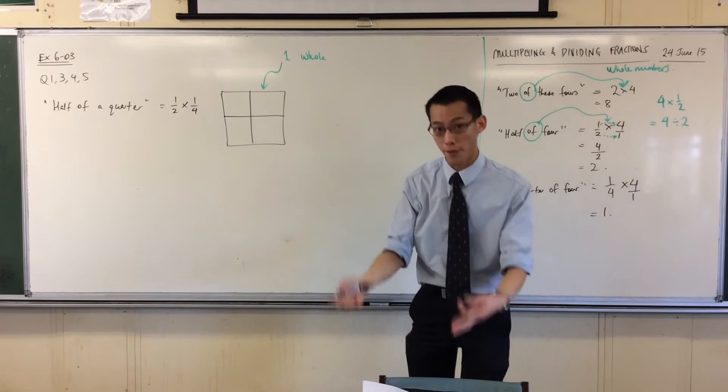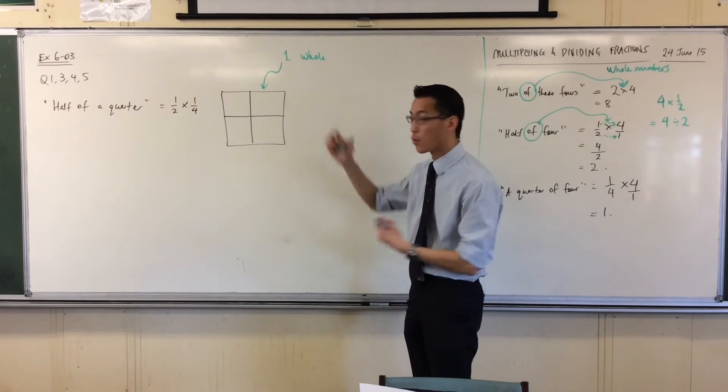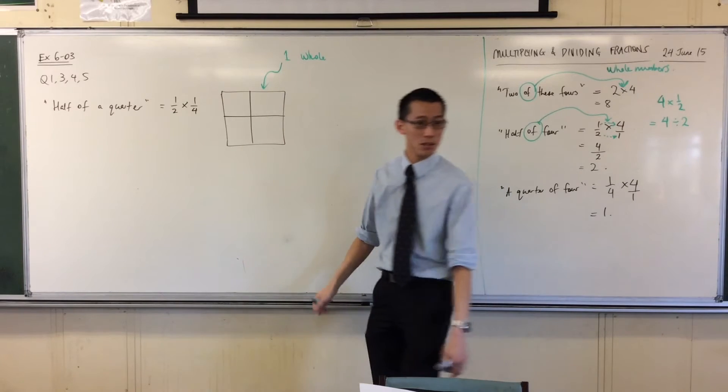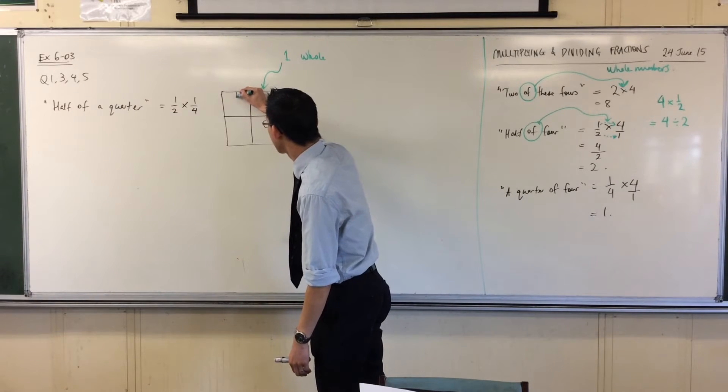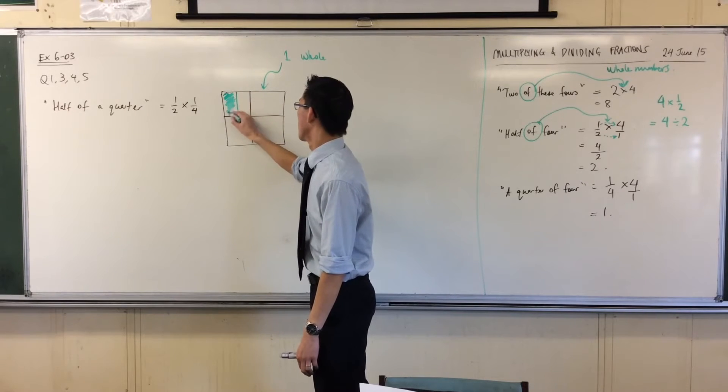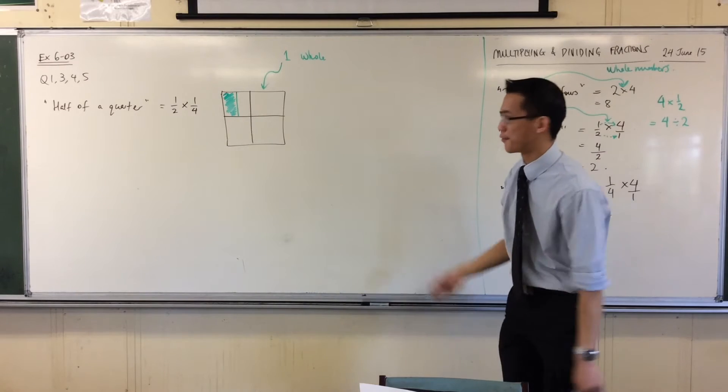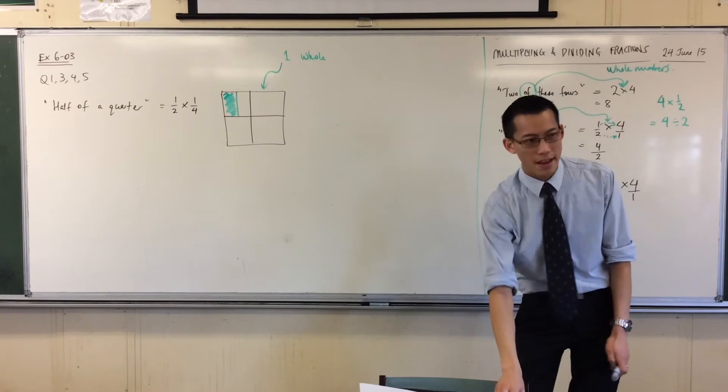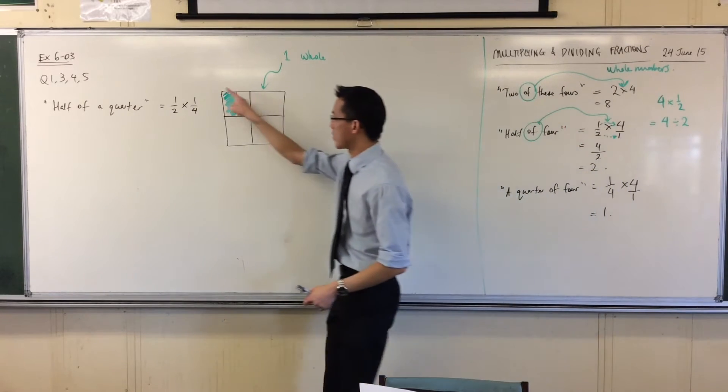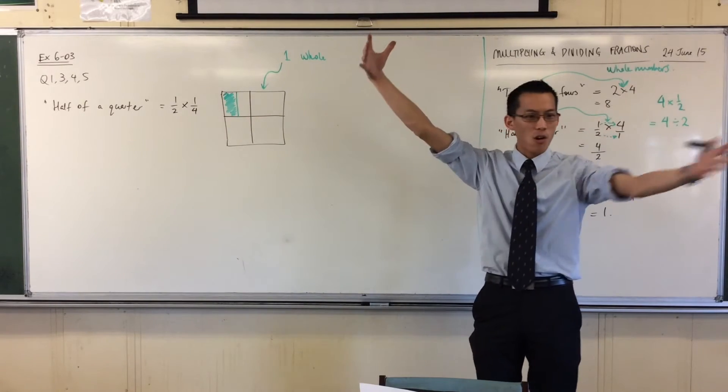Okay, now if I just want half of a quarter, I'm going to, if you've got another color, I'm going to take one of the quarters, I'm going to slice it right down the middle, right? Like this. That green thing there is half of one of the quarters, right?